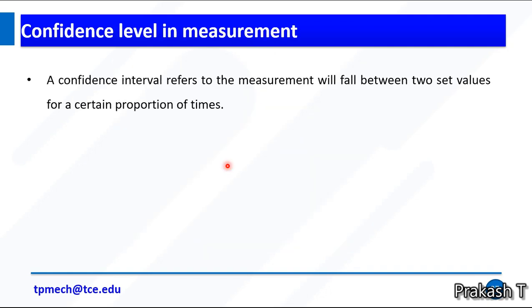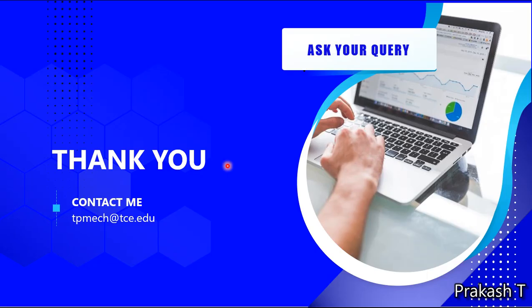Confidence level: a confidence interval refers to the measurement will fall between two sets of values for a certain proportion of the time. It refers to the measure of the degree of uncertainty or certainty in your measurements. Thank you. If you have any doubts, contact me.